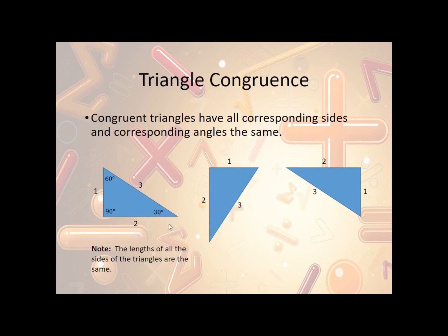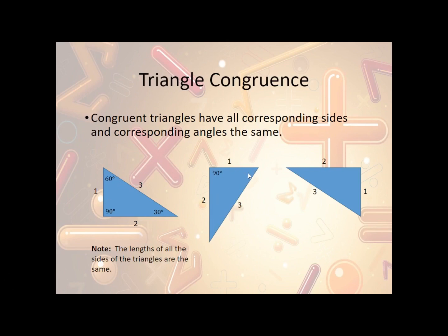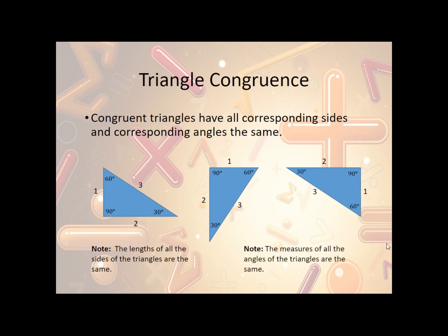Now, angles — we can do the same thing. So this angle here is 90 degrees. The corresponding angle is this one here, also 90 degrees. Then this one is 60 degrees, and its corresponding part is right here, so this is 60 degrees. And then this one is 30, and that corresponding one is here. Then we can do it again: we have our 90 degree angle, now that angle is up here — so this is my 90. Then I have my 60 degree angle, which is right here. Then my 30, which is now right here. So again, all the measures of the angles are the same.